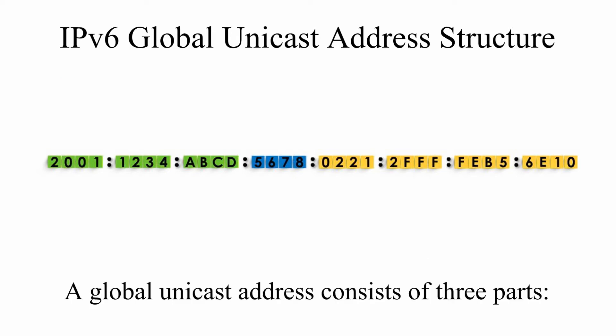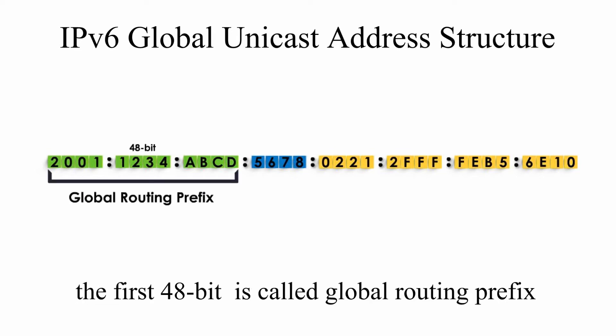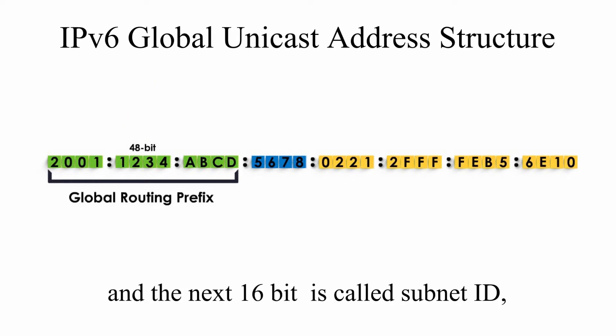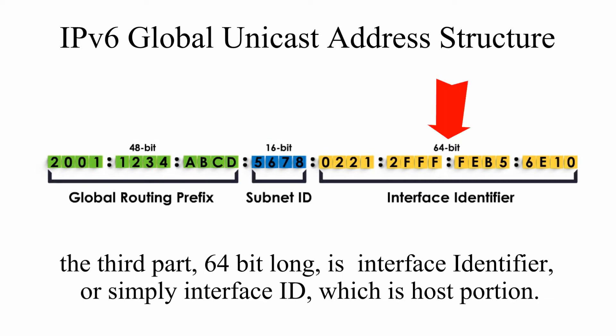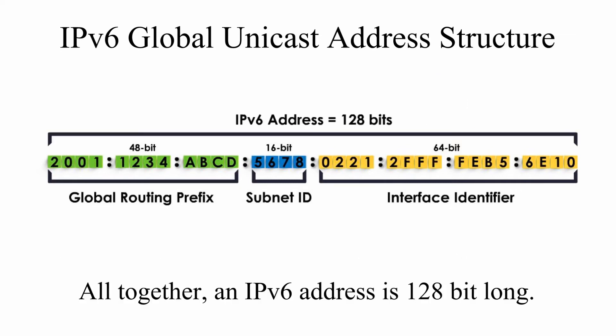A global unicast address consists of 3 parts. The first 48-bit is called global routing prefix. The next 16-bit is called subnet ID. The third part, 64-bit long, is interface identifier, or simply interface ID, which is the host portion of the IP address. Altogether, a global unicast address is 128-bit long.